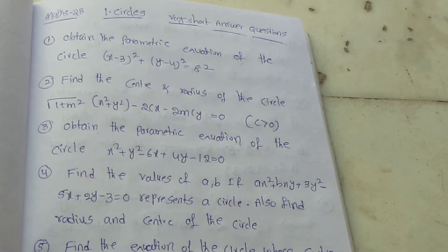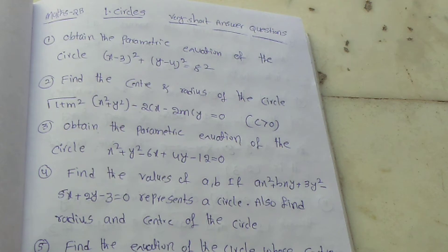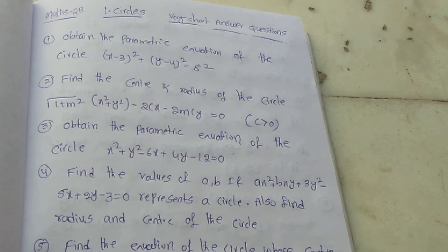Next question: Find the center and radius of the circle root of (1 plus m square) into x square plus y square minus 2cx minus 2mcy equal to 0, where c is greater than 0.